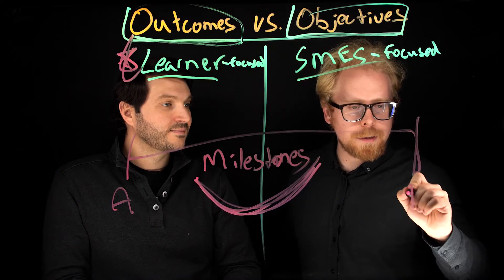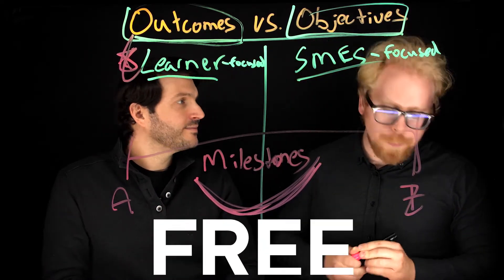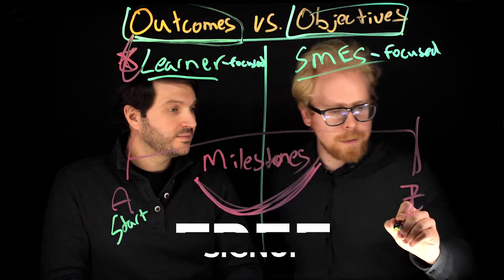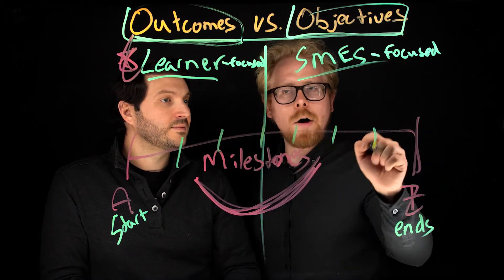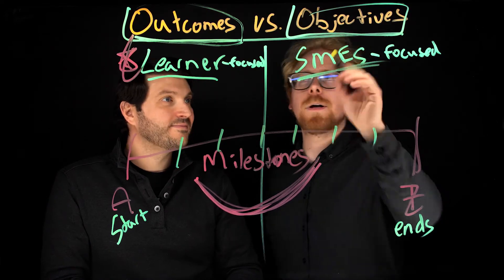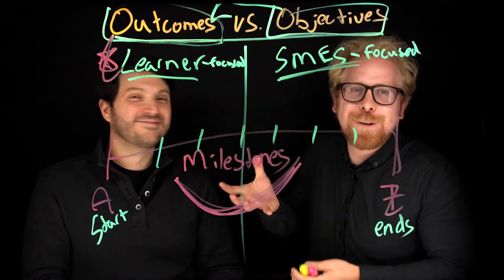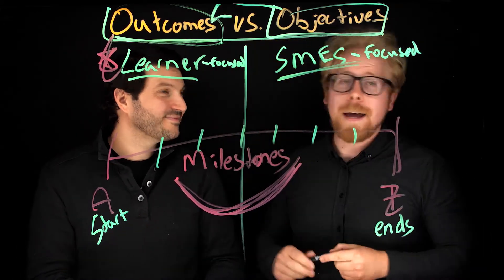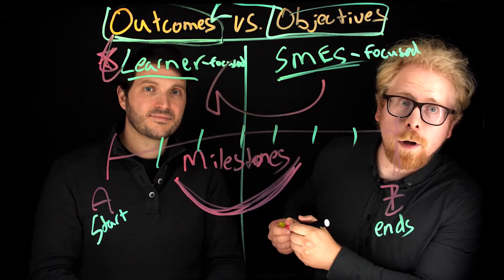The LTS statement — the Learner Transformation Statement — this is where learners start and this is where they end, or the results they get. The milestones are the outcomes they get along the way. They are also the objectives, but from the learner's perspective. We have another video all about how to build learning objectives the right way, and the right way is to build them based on outcomes — and they will come.